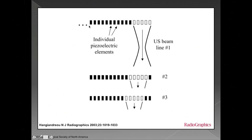In linear transducers you have many more individual piezoelectric crystal elements, and instead of utilizing interference patterns and firing them all at the same time, it actually selects a subset of crystal elements that are physically located next to each other in the ultrasound array, fires those sequentially to form the first beam line, then shifts over one for the second, and shifts over another for the third, and so on for the entire length of the array.